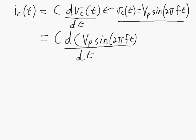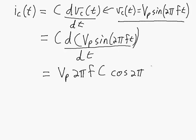So the rate of change of this sine wave — if we go through and take the derivative of this equation, what we'll end up with is Vp times 2πf times C, the capacitance, times cosine of 2πft. So if the voltage is a sine wave, the current's a cosine wave. And so they're both sinusoidal — it's just that the current is going to be leading the voltage in this case.